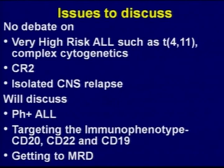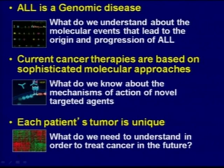Considering that, the issues to discuss are possibly some of the subtypes where we are making headways, such as Philadelphia-positive ALL, and perhaps targeting the immunophenotype — CD20, CD22, CD19 — and getting to MRD, as Dr. Ritchie alluded to. I won't debate on the high-risk patients such as T4q11, CR2, or isolated CNS relapse for now. The reason we can say this today is because ALL is a genomic disease, and our current approaches are much more sophisticated. We also understand that each patient's tumor is unique.